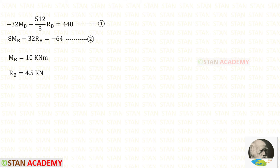Now we have two equations. Let us use a calculator to solve them. If you don't know how to solve two equations on a calculator, see the link in the description below. Using the calculator, for Mb I have got 10 kNm, and for Rb I have got 4.5 kN.